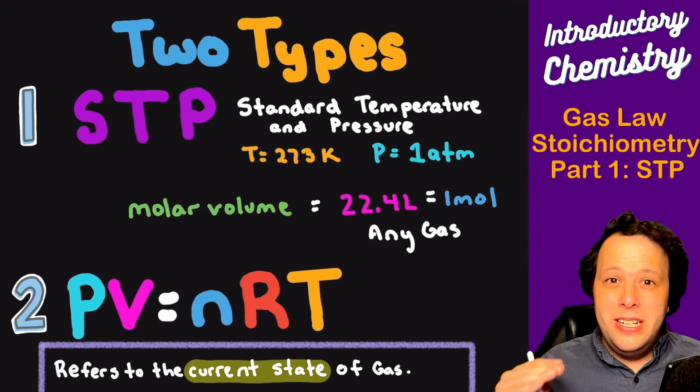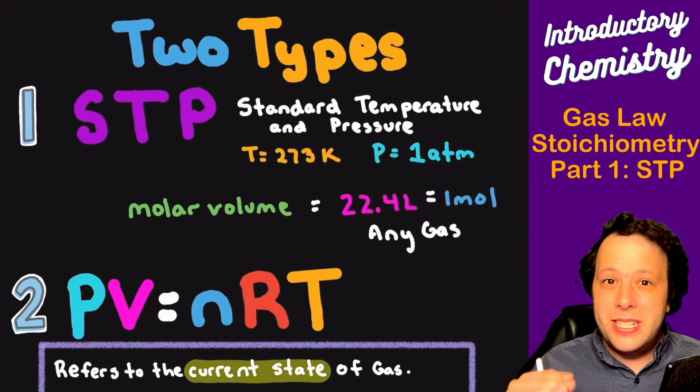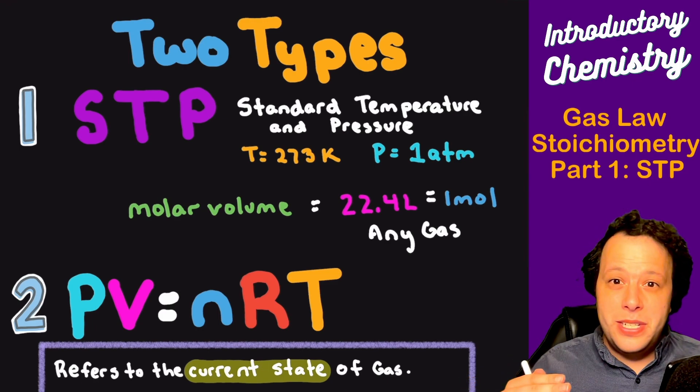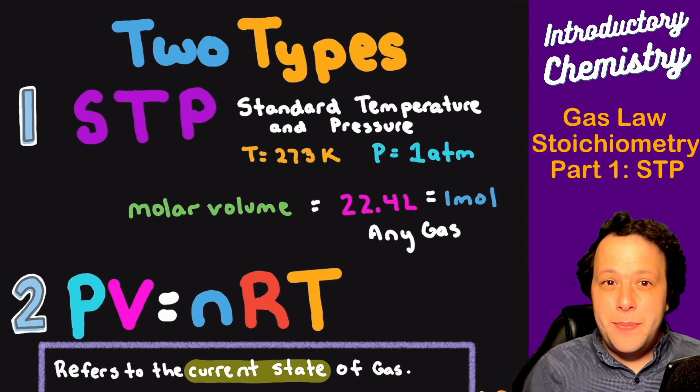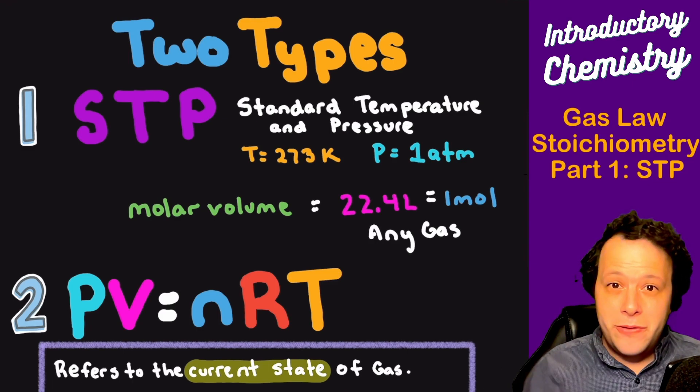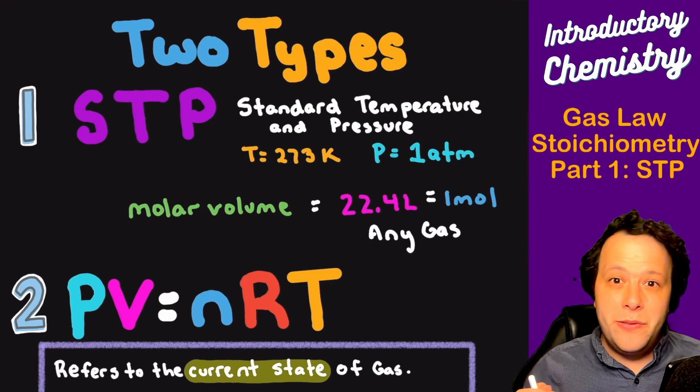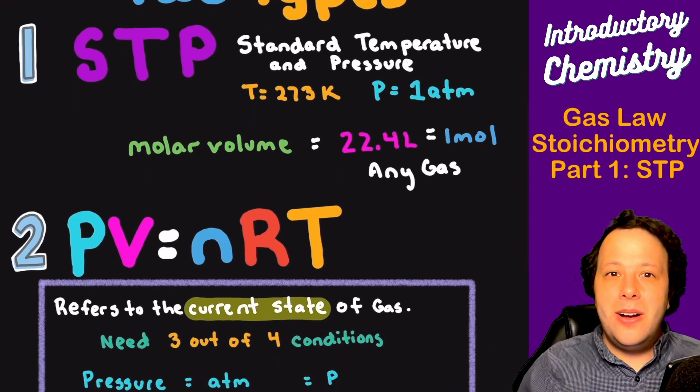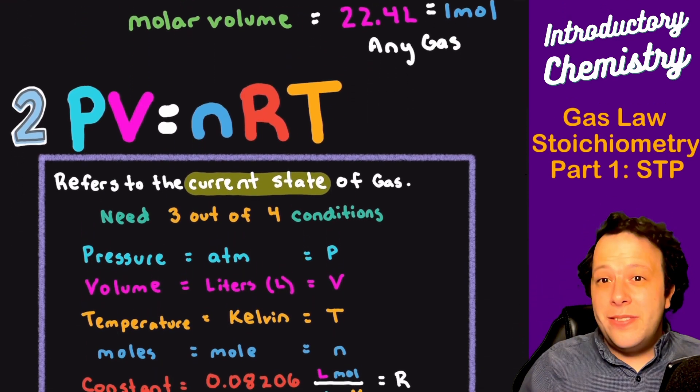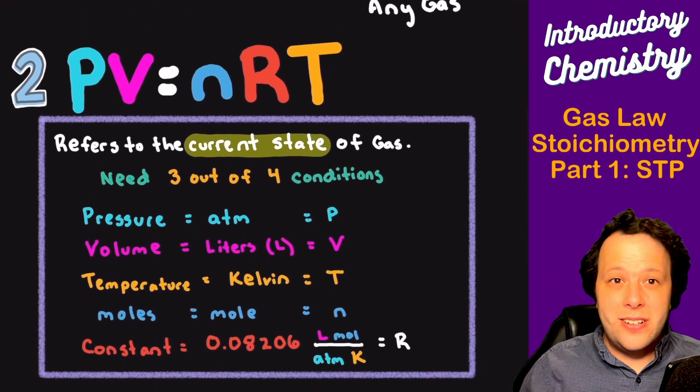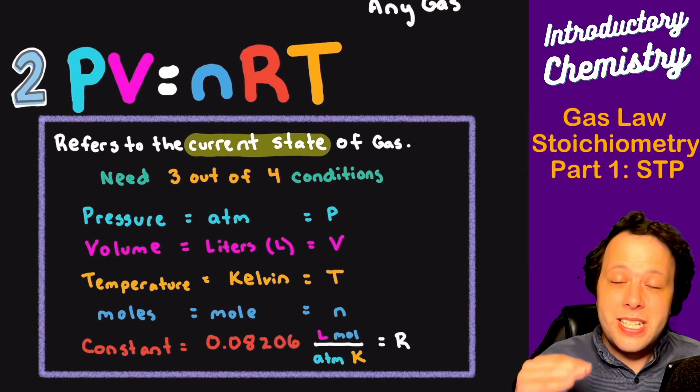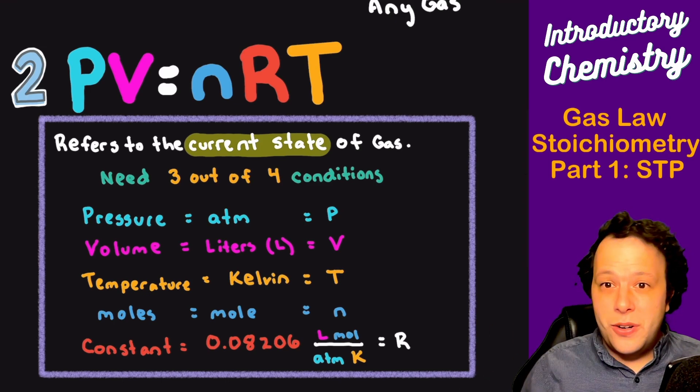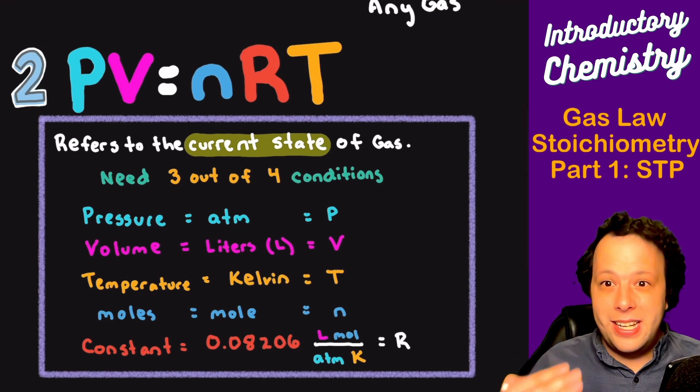With STP, just as a reminder, that's when you have standard temperature and pressure, meaning all the conditions are defined for you: temperature is 273 Kelvin, pressure is one atmosphere, and we also have access to the molar volume, which means that 22.4 liters of any gas is equivalent to one mole of a gas. If it's not at STP, or even if it is, you still could use the ideal gas law, but the ideal gas law always refers to what the current condition is of the gas after the reaction occurred or even before.